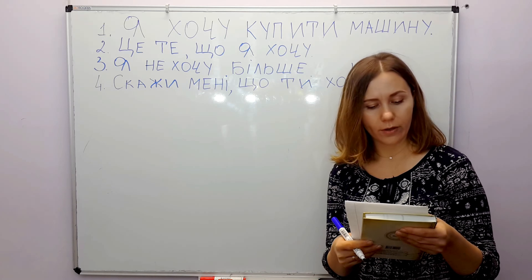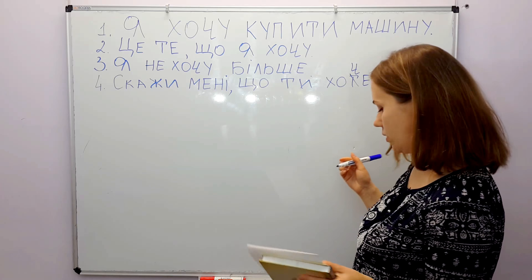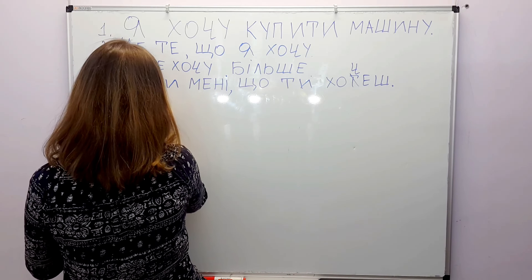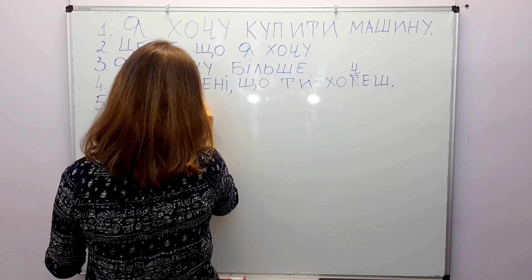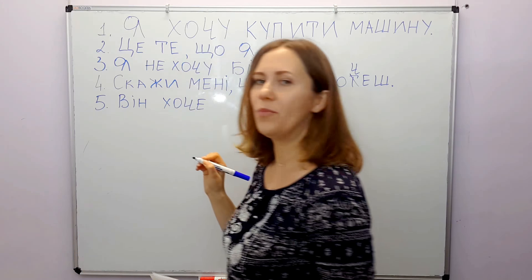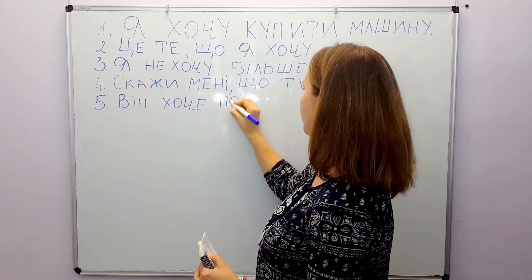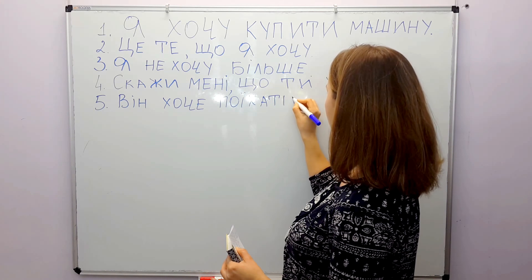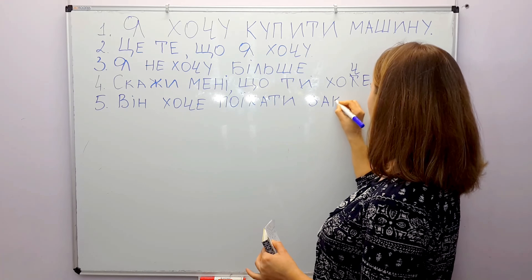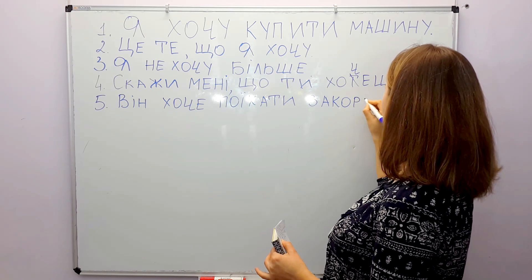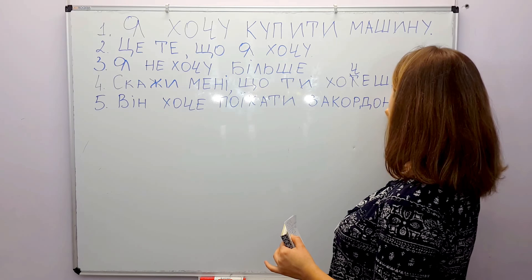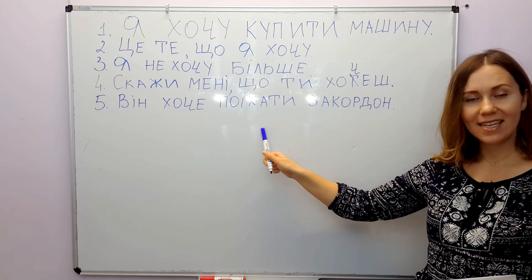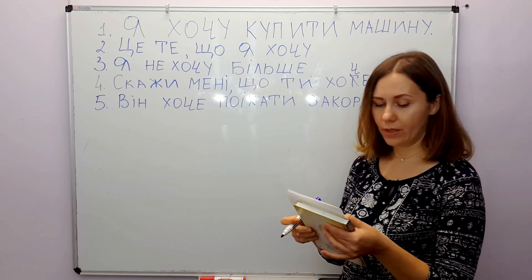He wants to go abroad. He — він. Wants — хоче. To go — поїхати. Abroad — за кордон. Він хоче поїхати за кордон. Наступне речення.